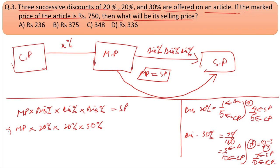The marked price is 750. After 20% discount: 4/5. After another 20%: 4/5. After 30% discount: 7/10. Multiply 750 by 4/5, 4/5, and 7/10. Three times four times seven gives the selling price.